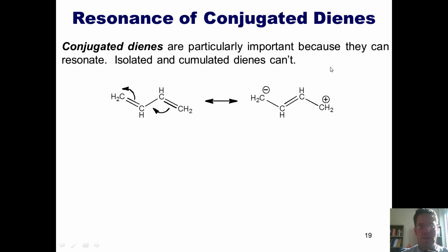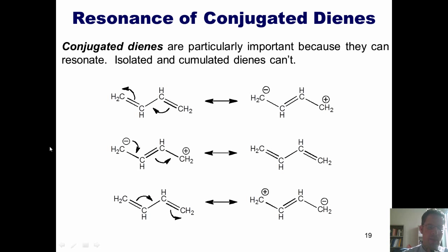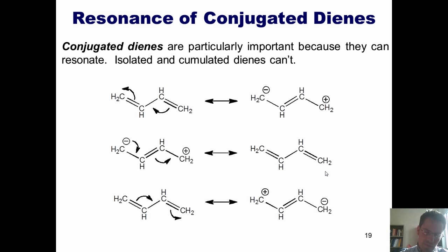You can imagine that this resonance contributor could go in reverse — where these lone pair electrons on this carbon thrust down to form a carbon-carbon double bond and push these pi electrons up to form another carbon-carbon double bond, reverting back to the original molecule. I could similarly go in the opposite direction, having pi electrons push up onto the carbon at the right giving it a negative charge, and these pi electrons closing to give a carbon-carbon double bond and a positive charge on the leftmost carbon. All of these are resonance contributors of this one conjugated diene, illustrating how conjugated dienes do indeed experience resonance.